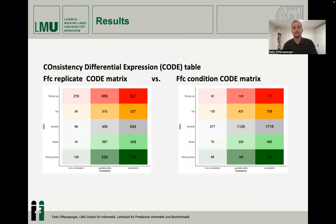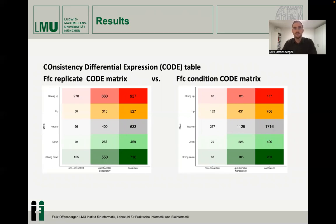In the consistency differential expression table, features are categorized for consistency into three classes — non-consistent, questionable, and inconsistent — and for effect into strong up, up, neutral, down, and strong down. When considering only the technical bias across conditions (left), there are lots of genes with high effect classes, while when considering the technical and biological bias, the features are more centered towards a neutral effect.